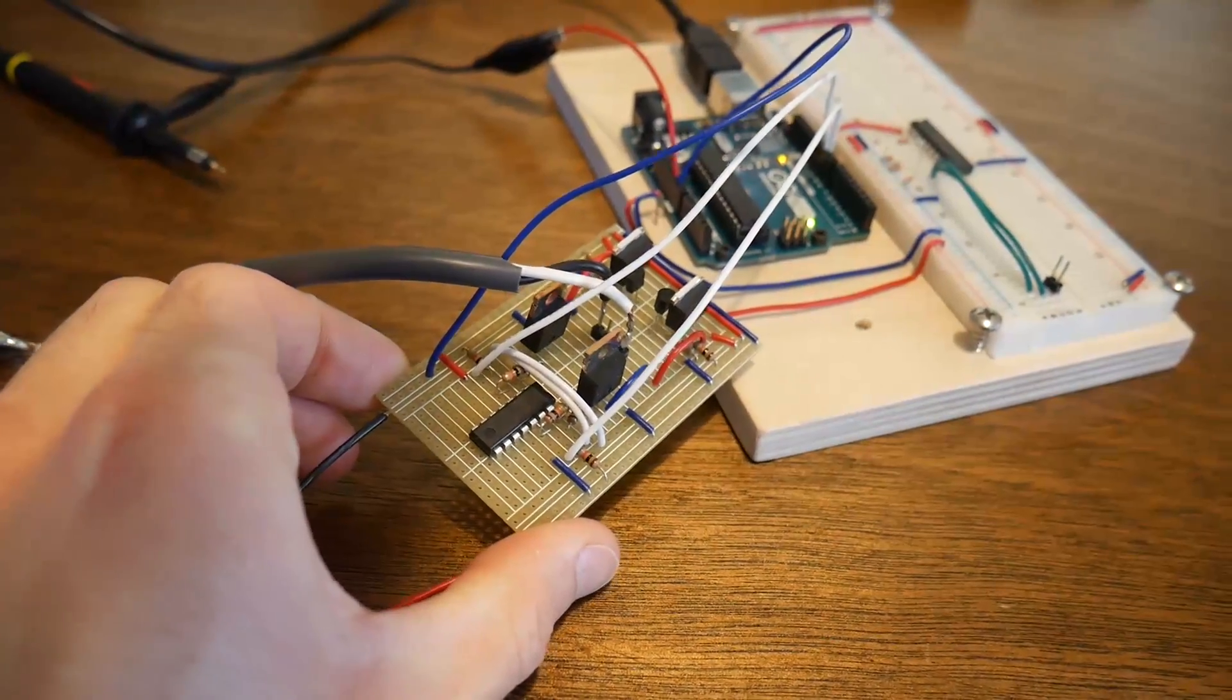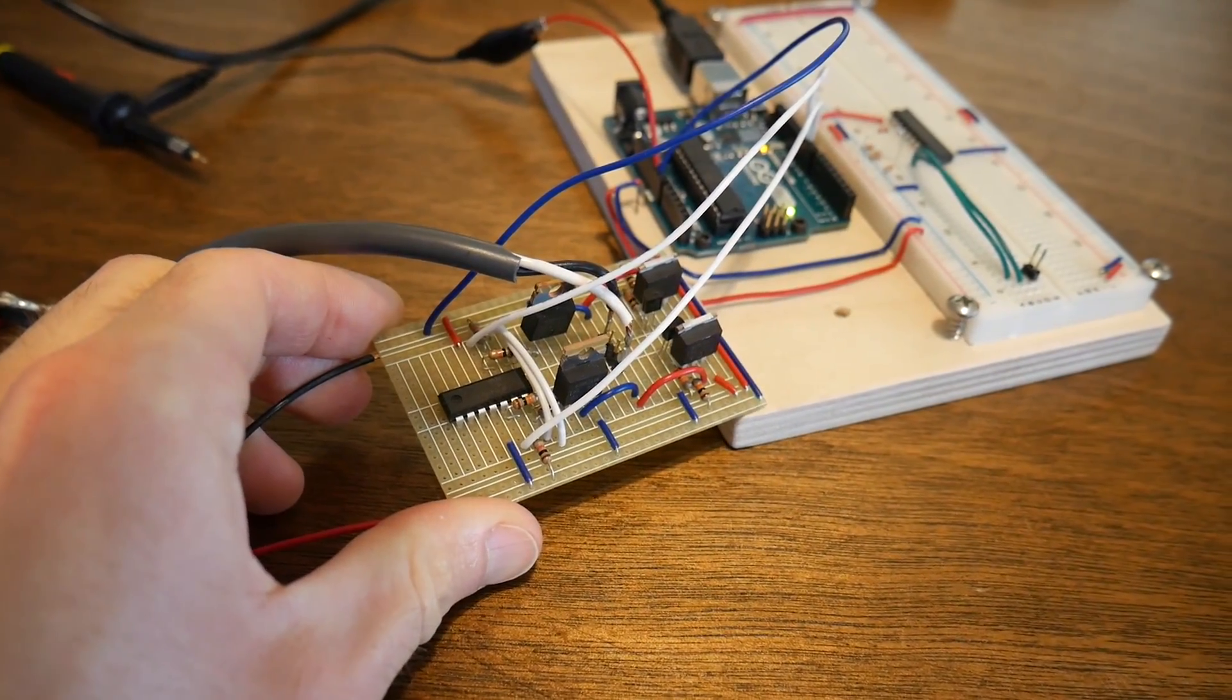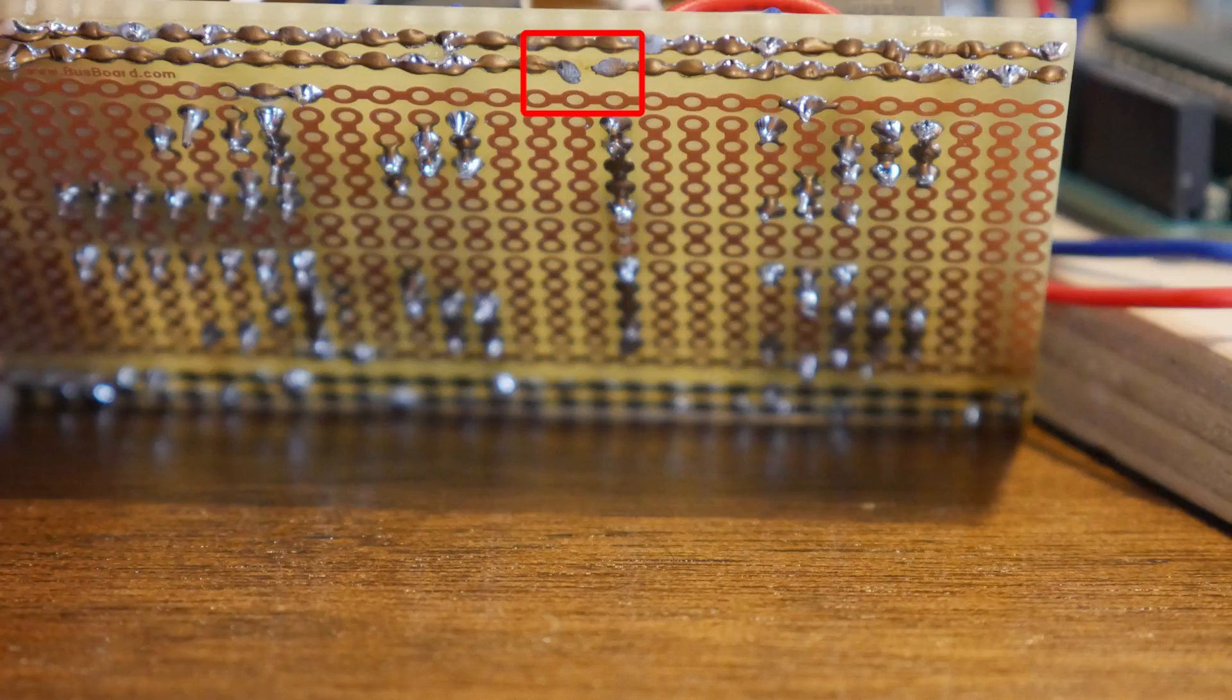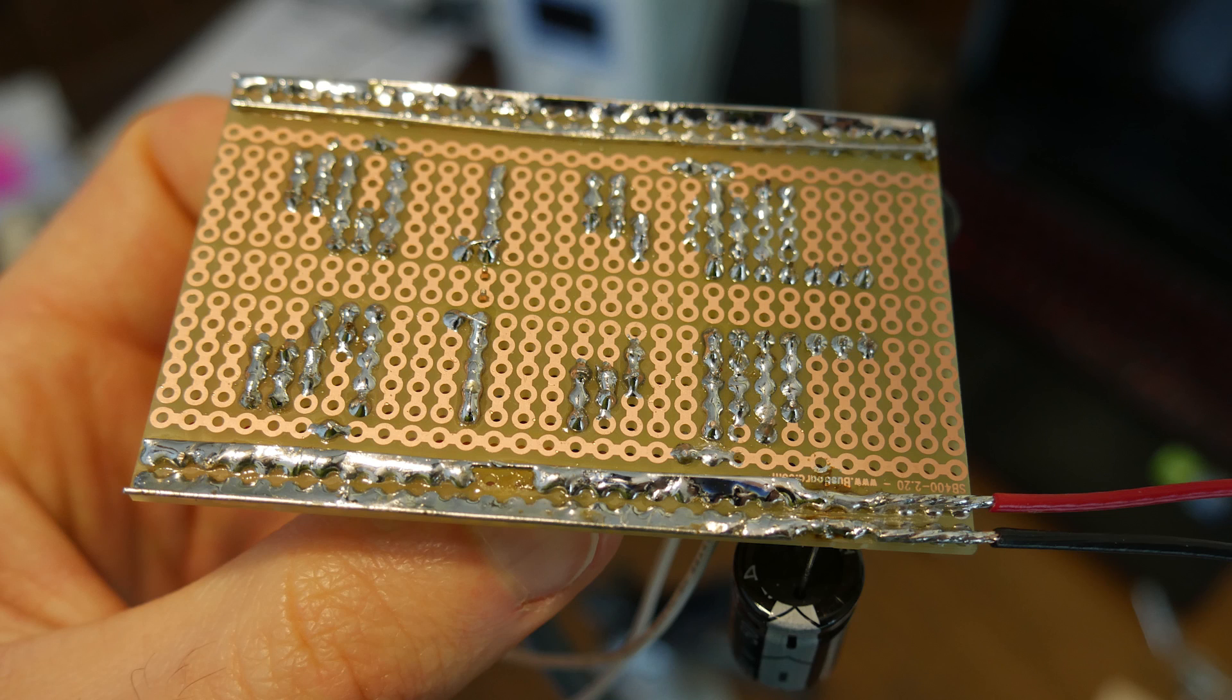Our last test ended with a pop, so I flipped over the ESC that I built. It turns out, surprisingly on the bottom, that those traces are not rated for 29 amps and it just blew one of the things there.